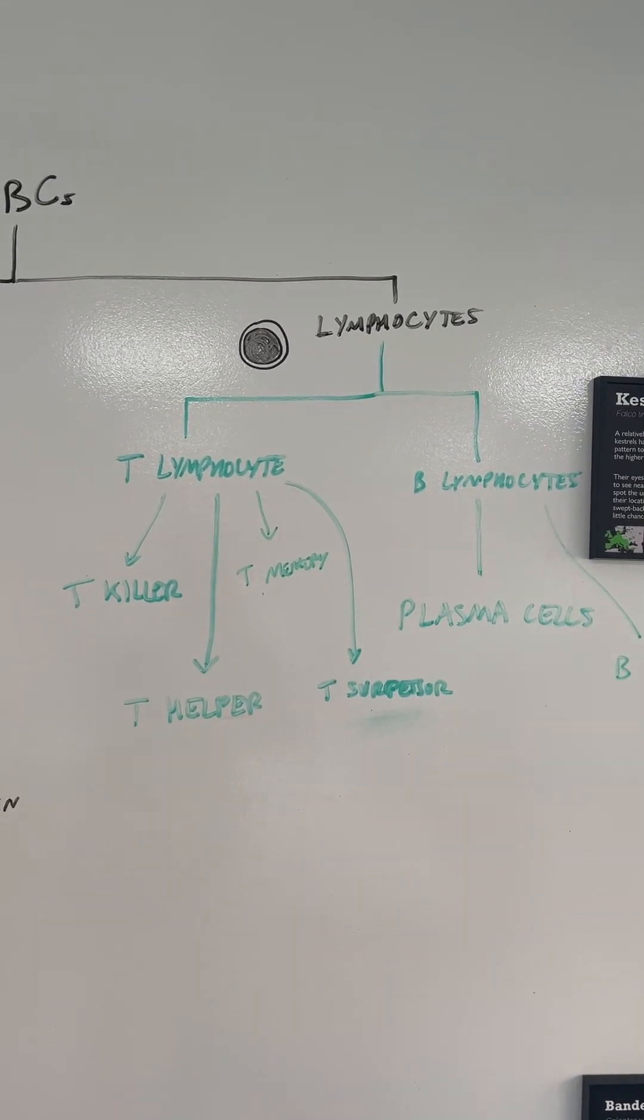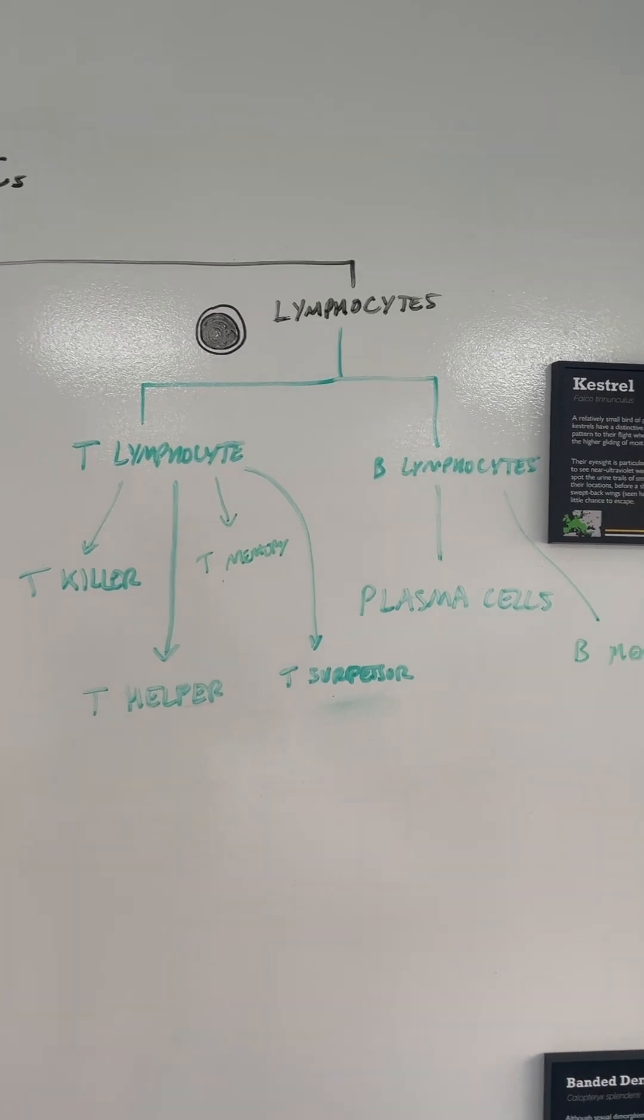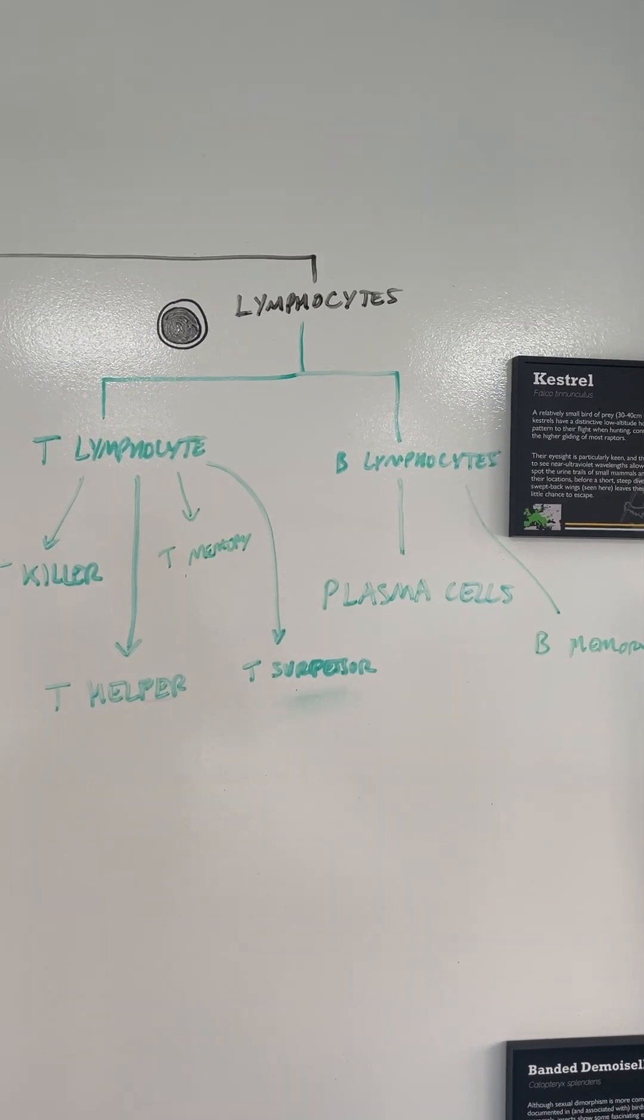In the T-lymphocytes you've got killer cells, helper cells, memory cells and suppressor cells. On the B-side we've got plasma cells and memory cells.